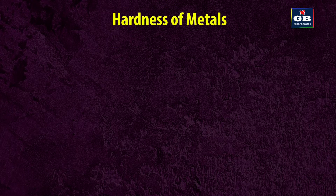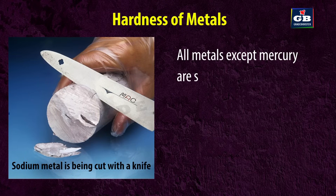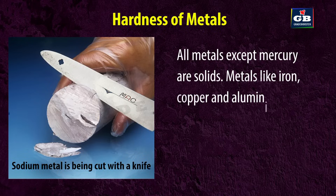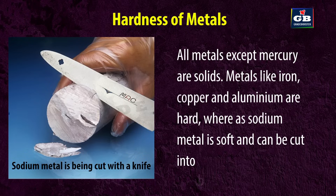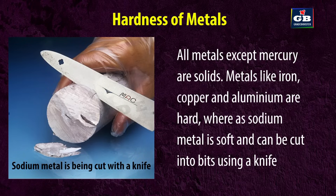Hardness of metals. All metals except mercury are solids. Metals like iron, copper, and aluminium are hard. Whereas alkali metals like sodium, potassium, and lithium are soft and can be cut into bits using a knife.